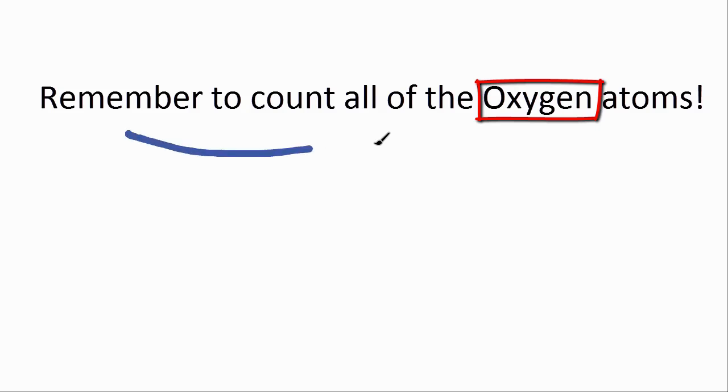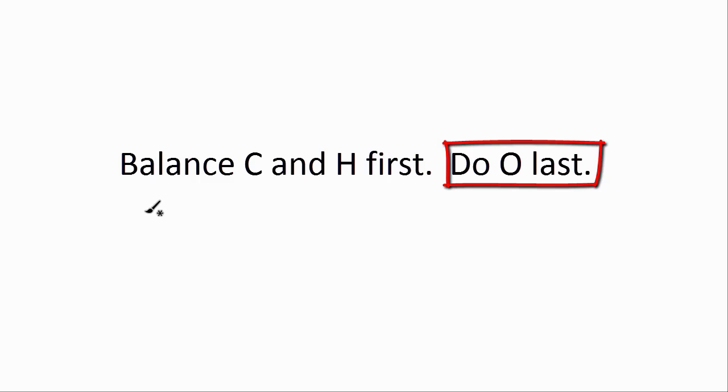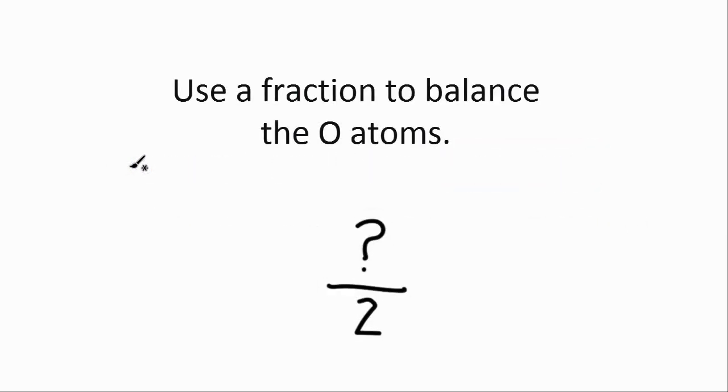So the keys are: make sure you count all of the oxygens on the product side, the carbon dioxide and the H2O, then leave the oxygens to last to balance. So deal with the carbons and hydrogens first, use that fraction to fix the oxygens, and then if you want whole numbers, multiply all of the coefficients in the equation by two.